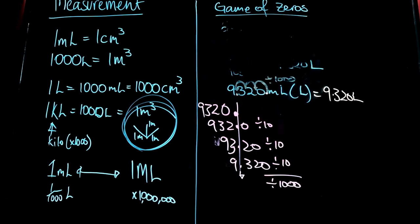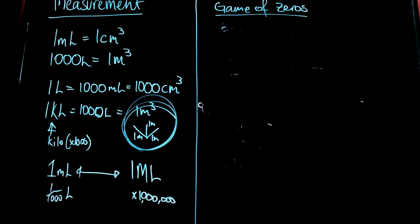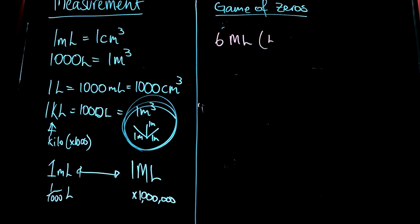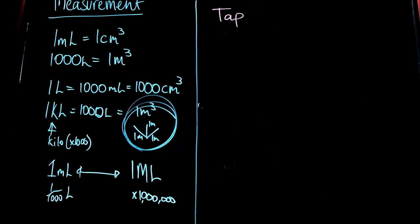Let's do another example going the other way — a conversion playing with a whole bunch of zeros. Say we have 6 megaliters and want to turn that into liters. We understand this is millions of liters. In the game of zeros: starting with 6 as a whole number, 6 megaliters becomes 6,000,000 liters — six zeros — then put the units on the end. That's what we do.